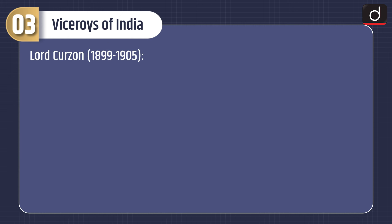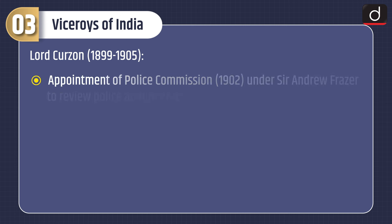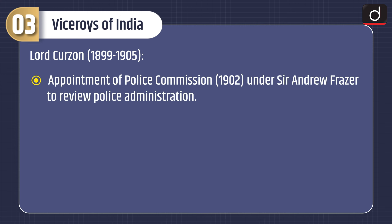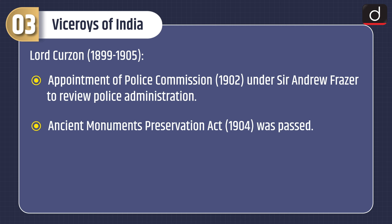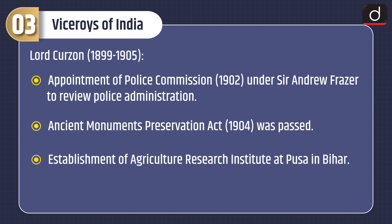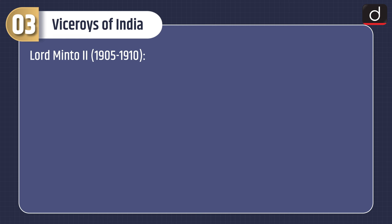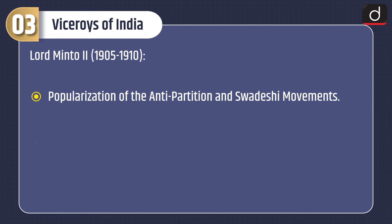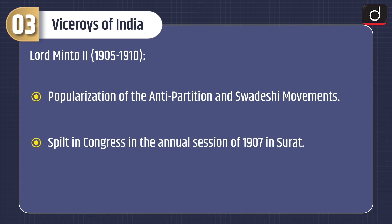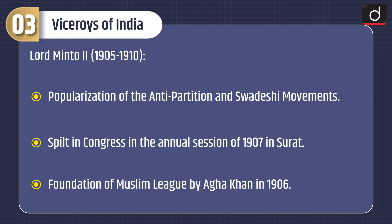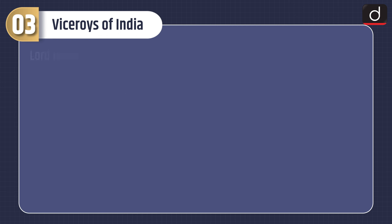Lord Curzon, 1899–1905: the Police Commission of 1902 under Sir Andrew Fraser was appointed to review police administration. The Ancient Monuments Preservation Act of 1904 was passed. The Agriculture Research Institute was established at Pusa in Bihar. Bengal was partitioned in 1905. Lord Minto II, 1905–1910: popularisation of anti-partition and Swadeshi movements, the split in Congress at the annual session of 1907 in Surat, and foundation of the Muslim League by Aga Khan in 1906.